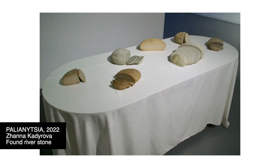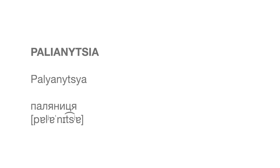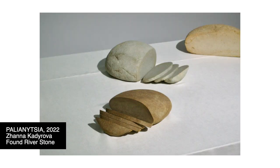Since the biennale ended about four months ago, here are some pieces I personally liked. This piece by Ukrainian artist Chana Kadirova is called Polynesia — rocks selected and cut to look like a loaf of bread. It was made to represent this specific bread because its name in Ukrainian, Polynesia, is a word that Russians cannot pronounce. So it serves as a way to differentiate between friends and enemies. I think it's very simple yet very neat.